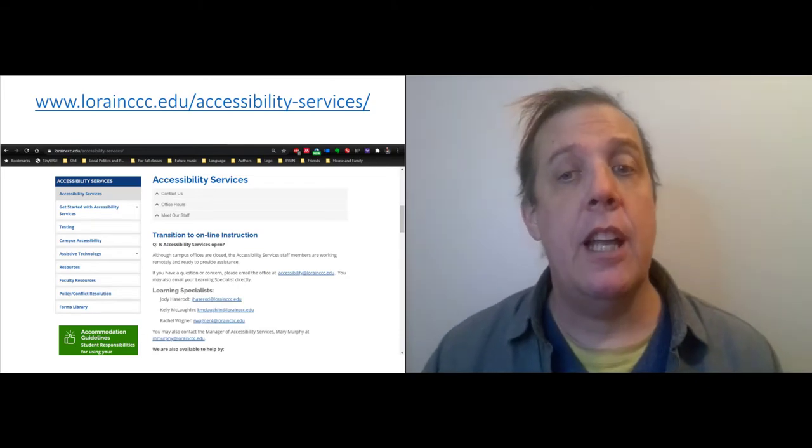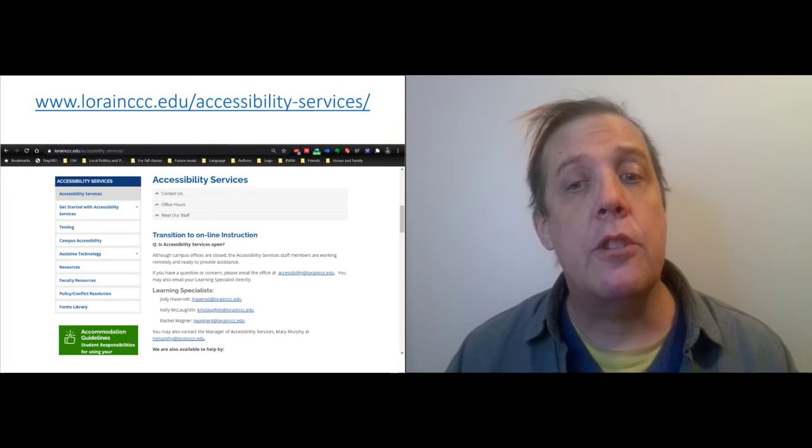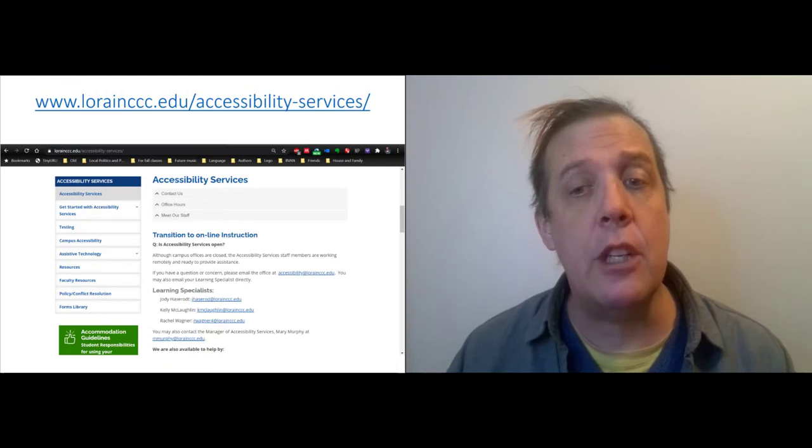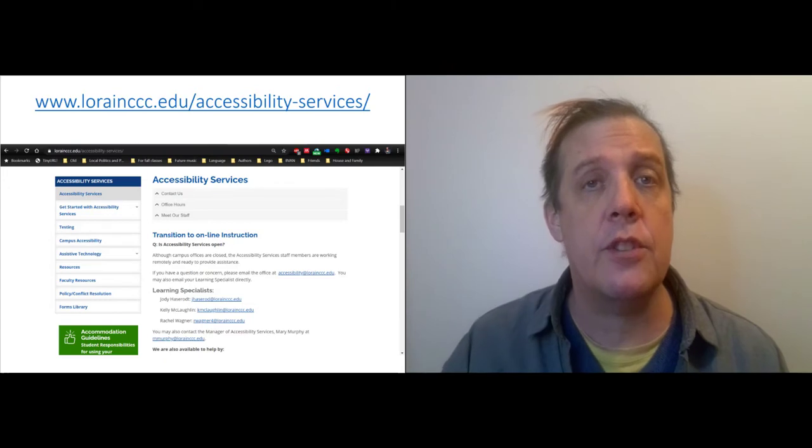If you have a disability and need an accommodation, you are legally entitled to one. To arrange it, you should contact the Office of Accessibility Services. You should also talk to me early in the term. The contact information for accessibility services is on the screen.